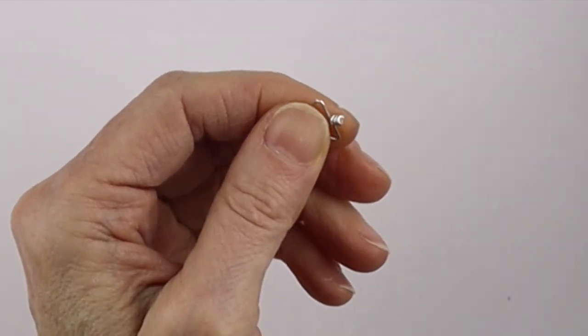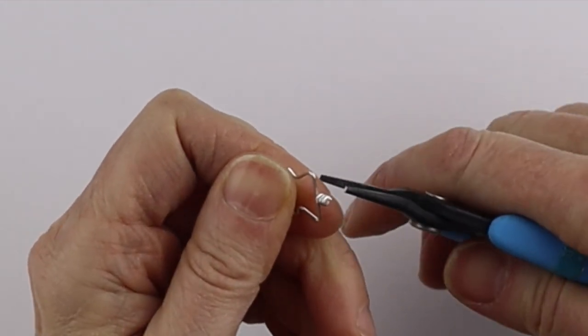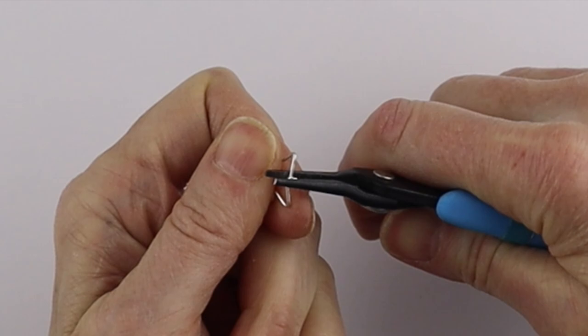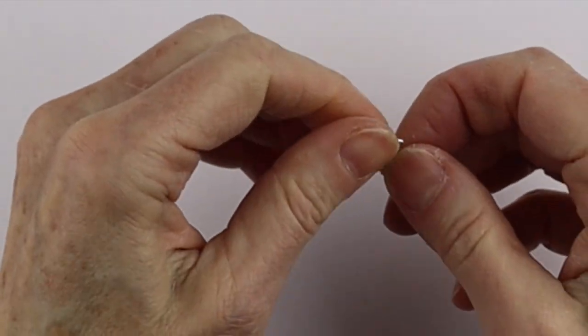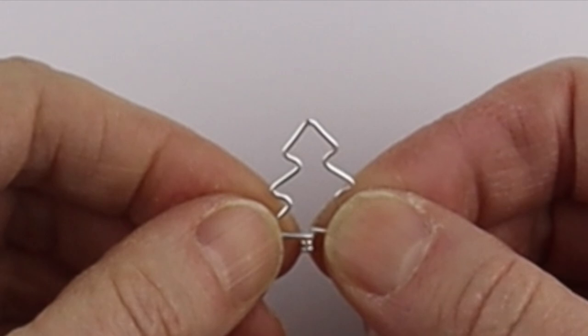And then just really get your cutters in there and just clip it as deep in as you can. You might have to bend it back and forth a bit. You can file that end too just with a file. I'm just going to pinch it in a little bit. So there's our basic tree shape.